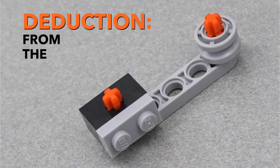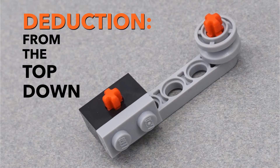Deduction is a top-down reasoning process where you start from large, general sets of ideas — called premises — to formulate a conclusion about something specific. In this case, looking at your large, completed Lego sets lets you determine a lot about the individual piece and where it belongs.